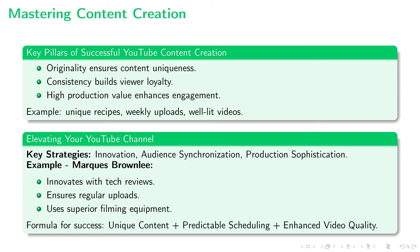It doesn't stop there. You need to persistently innovate, stay synchronized with your audience, and continually enhance your production sophistication. Take Marques Brownlee, for instance, famed for sharing innovative tech content — he keeps his audience intrigued with regular uploads and never compromises on quality, with high-end filming equipment as his secret sauce. This brings to fruition a simple formula: unique content, plus predictable scheduling, plus enhanced video quality — factoring in these ingredients guarantees a YouTube channel capable of thriving in the digital arena.